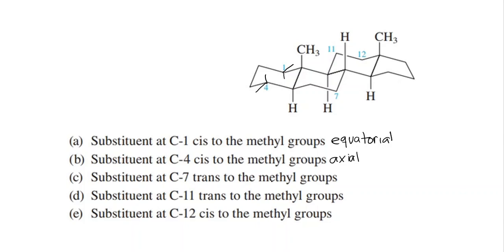Part c: substituent at C7, trans to the methyl groups. The methyls are up, and trans to the methyl means down. At C7, down is axial and up is equatorial, so this substituent must be axial.